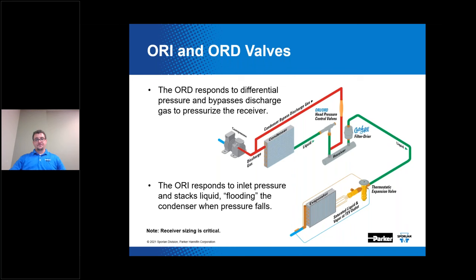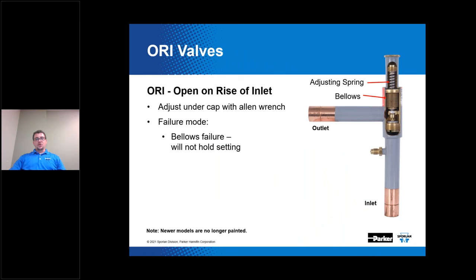The ORI is an adjustable valve with an adjustment range of 65 to 225 PSIG. It has a flexible bellows above the seat disc. The outlet pressure is exerted on the underside of the bellows and the top side of the seat disc, and because the effective area of those bellows equals the area of the port, the outlet pressure is canceled — allowing the inlet pressure, or condensing pressure, and the spring pressure to be the two operating forces controlling the position of the ORI. We do offer spring kits for the ORI with a larger range of adjustment from 100 to 290 pounds.